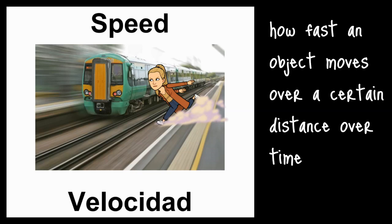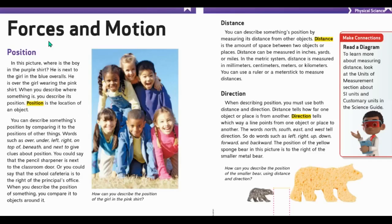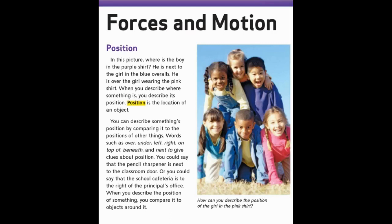All right boys and girls, we're going to hop on over to our science textbooks and we're going to read a little bit more about motion and the vocabulary words that we just learned. This chapter in our textbook is called Forces and Motion. The heading says position. In this picture, where is the boy in the purple shirt? He is next to the girl in the blue overalls. He is over the girl wearing the pink shirt. When you describe where something is, you describe its position. Position is the location of an object. You can describe something's position by comparing it to the position of other things.